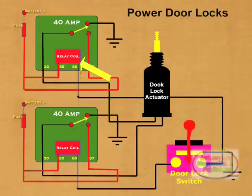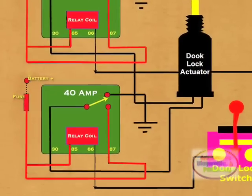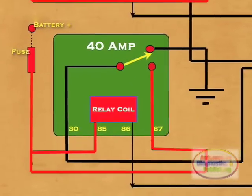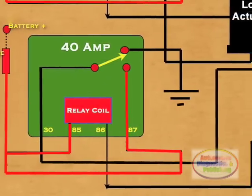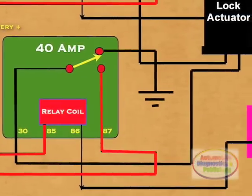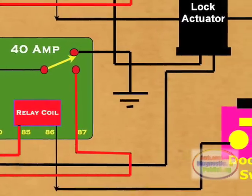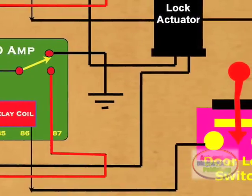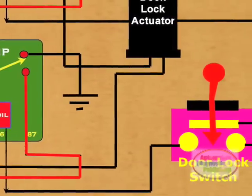As soon as we flip the switch the other direction, the previously activated relay turns off and the other relay is then activated. In essence, this reverses the polarity of the door lock actuator. The end result is a full up and down movement of the door lock.